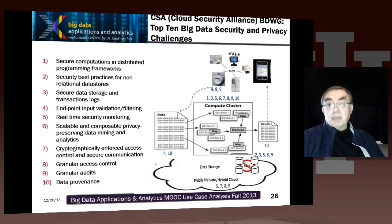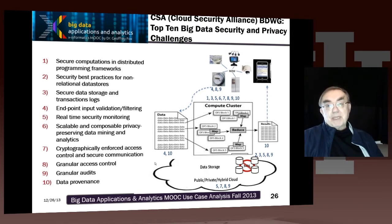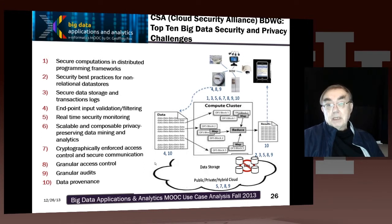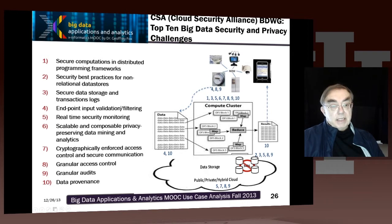Previously, a big data working group from the Cloud Security Alliance identified the top ten big data challenges, which we will see on the next slide. The nice thing about both these slides is they not only write down ten challenges — they tell you where they are in the architecture. So we have here a whole bunch of devices, and here's challenge four: end-to-end input validation and filtering. So challenge four occurs here and here.